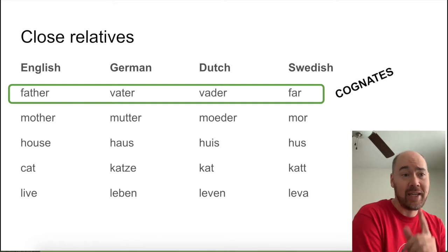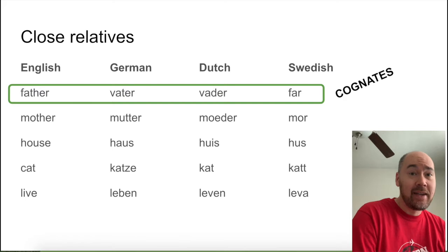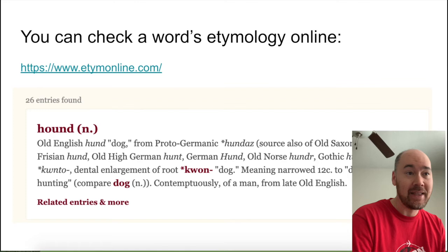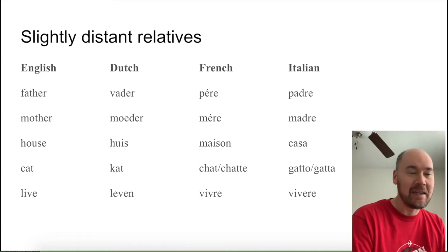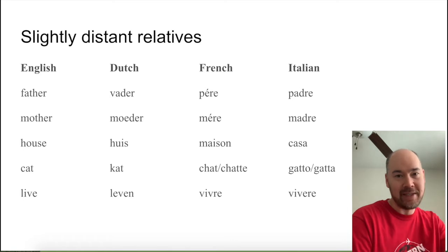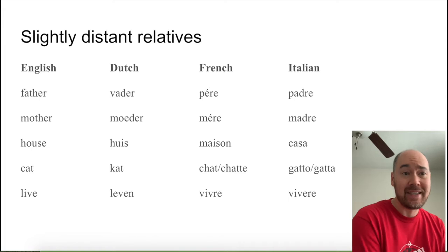Sometimes, as in the English 'cat' and the Dutch 'kat,' just the spelling is different. Other ones can be a bit harder to see, and it'll be even harder to see when you get further away on the family tree of Indo-European languages. This list of words includes two words from the Germanic branch, English and Dutch, and then two words from the slightly more distant Romance branch — French and Italian. You can see the words are still similar, but less similar.